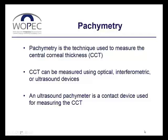The accuracy of all tonometric devices is affected by the biomechanical properties of the cornea. Pachymetry is the technique for measuring the central corneal thickness, or CCT, which can have an effect on the IOP measurement. The central corneal thickness can be measured by optical, interferometric, or ultrasound devices.